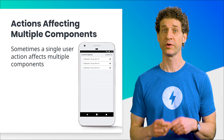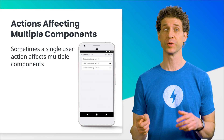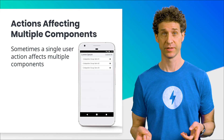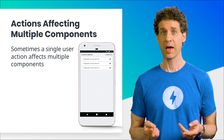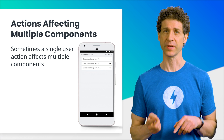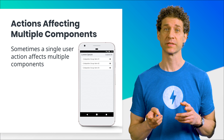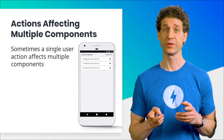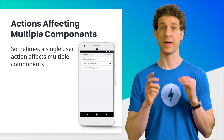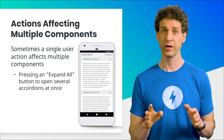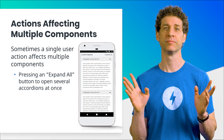Sometimes we want a single user interaction to affect multiple components. For example, we might have a section of our website with several closed accordions. If a user presses a button saying expand all, we want all the accordions to open at the same time.